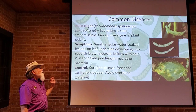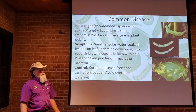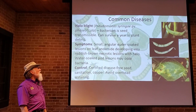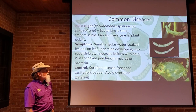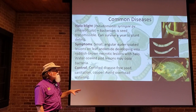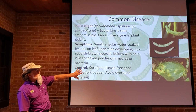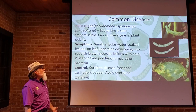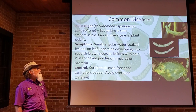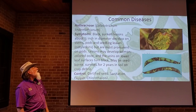Halo blight is caused by Pseudomonas syringae and can survive for up to a year in plant debris — so always remove plant debris and keep your garden clean. You'll see angular water-soaked lesions with a distinctive necrotic or chlorotic halo surrounding them — hence the name. It is also seed transmissible, so use certified disease-free seed, practice good sanitation, and avoid overhead watering to prevent spreading it from infected to healthy plants.